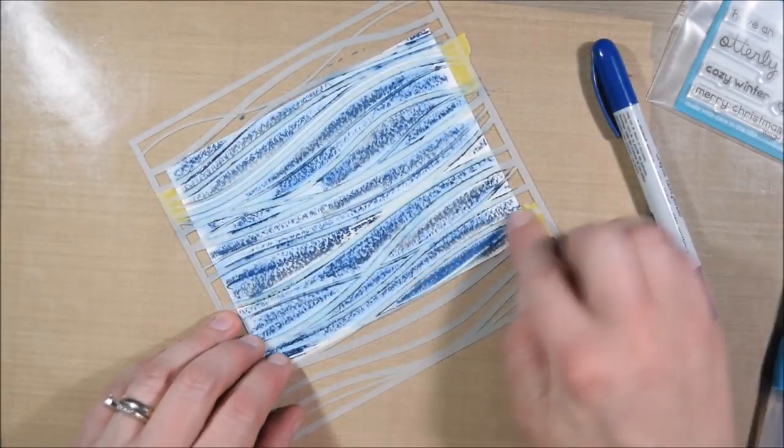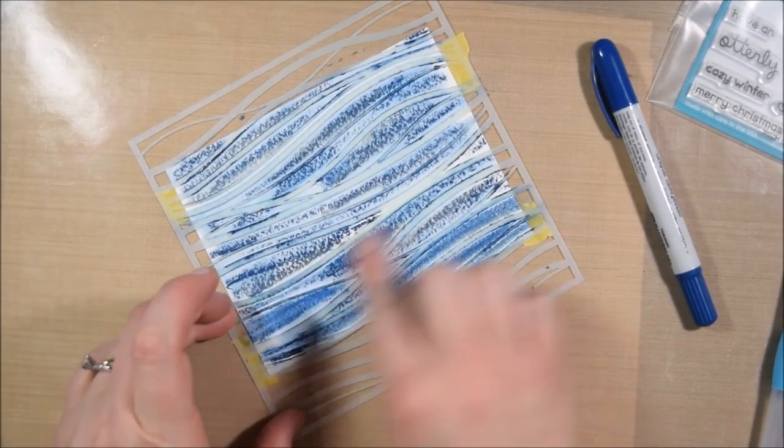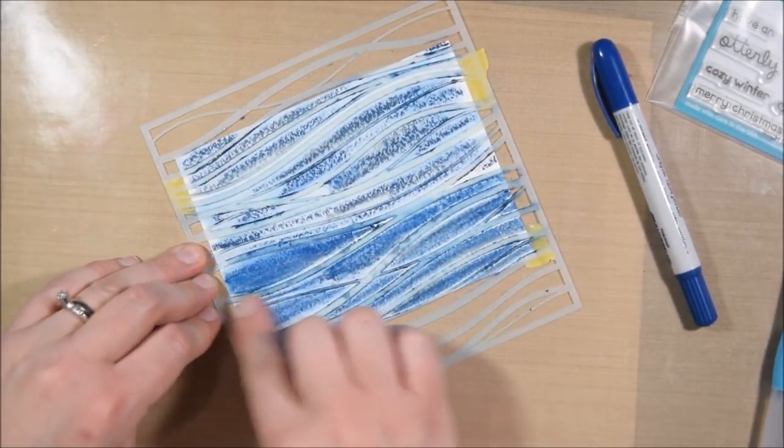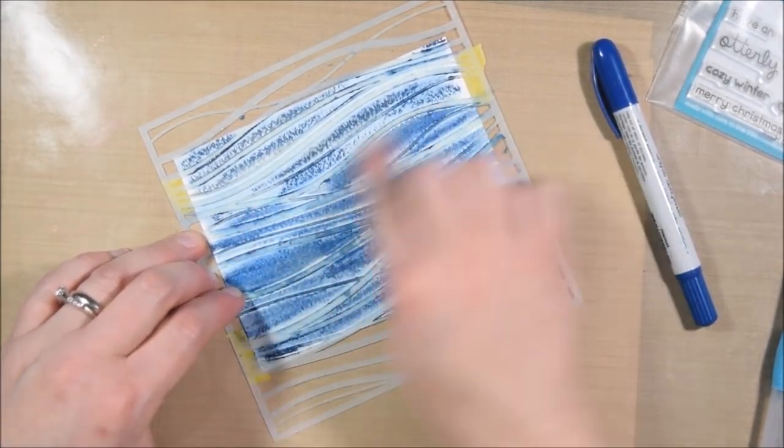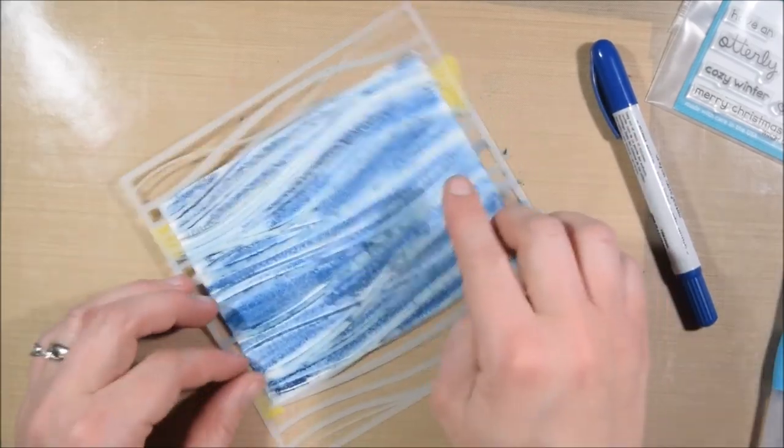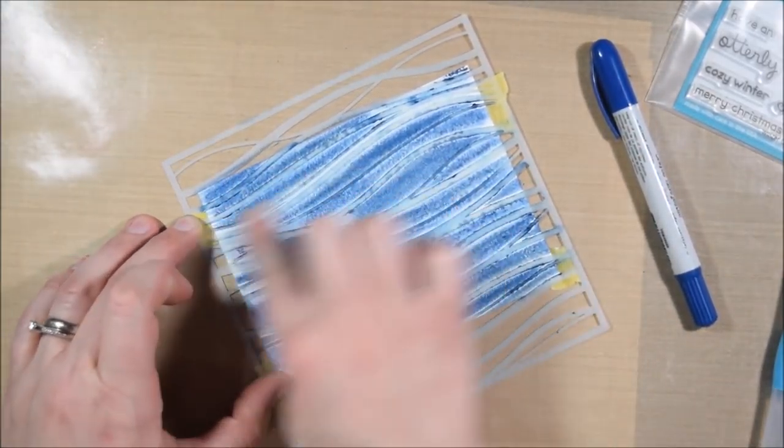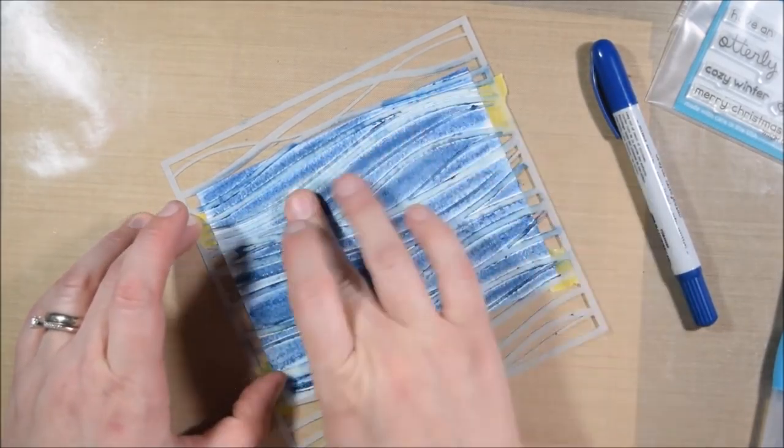But I was able to wet the distress crayon and then go in with my finger and blend it out. You could also blend it with a baby wipe and then you probably wouldn't have to wet it. I just took one of my CapTron water brushes and applied a little bit of water. I liked that because I could control how much water I applied. I didn't want it to be too wet because if it was really wet then a lot of it would seep under the stencil.